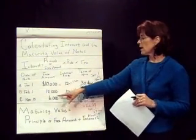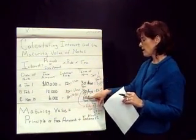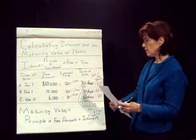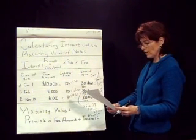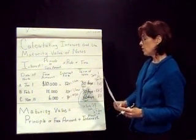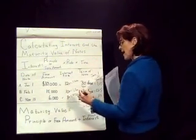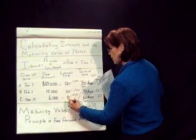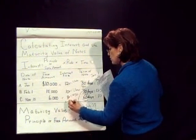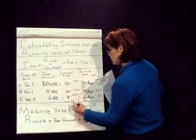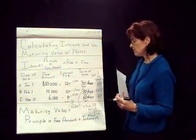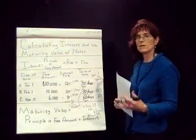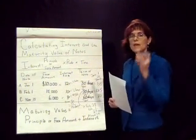There's one more note — it's dated November the 15th and it's a 60-day note, so we need to know the number of days in November and December because it's going to cross over. November has 30 days, so if we take November 30th minus the 15th, there are 15 days remaining in November. Then we go on into December, which has 31 days, so we add 31 days there.